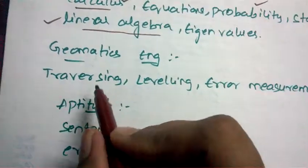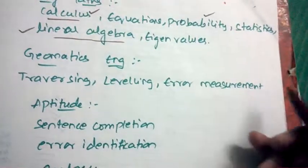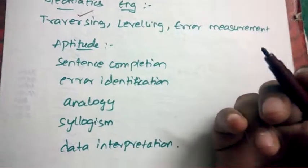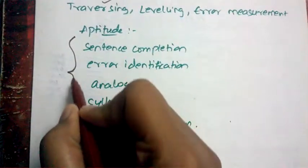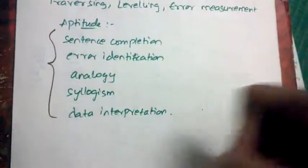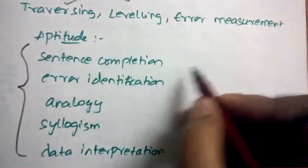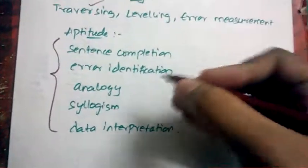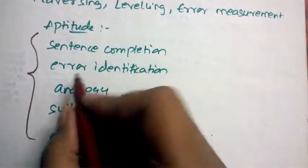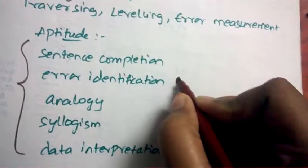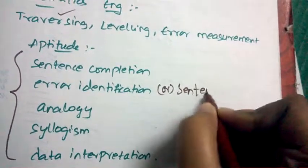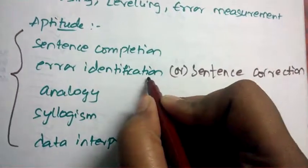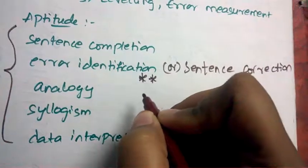You also need to concentrate on aptitude with equal priority. Out of the aptitude topics, these five are very important and most questions will be asked from them. The first topic is sentence completion — it's fairly easy; they ask you to complete a given sentence. The second is error identification, also called sentence correction. This is a very important and confusing topic because the options will be really similar, making it difficult for the student to select the correct one.